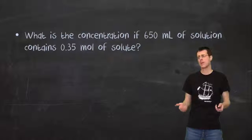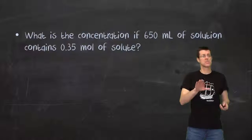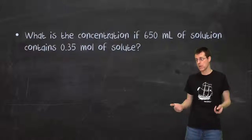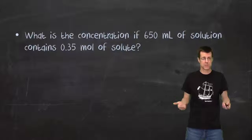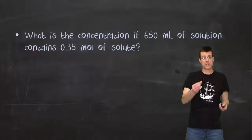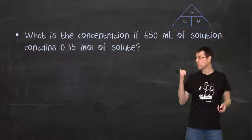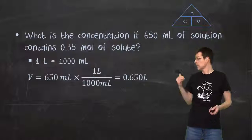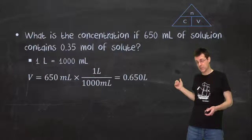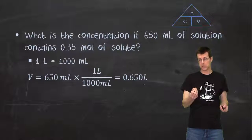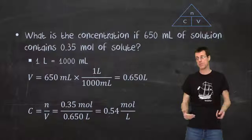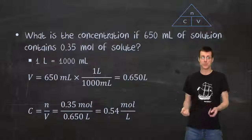Another kind of question. Make sure you pause this, run the numbers, and make sure you understand it. What's the concentration if 650 mL of solution contains 0.35 mol of solute? You have to have volume in liters, which means our first job is to convert milliliters into liters. 1 L = 1000 mL. V = 650 mL × (1L/1000mL) = 0.650L. You don't have to set it up like that or show that work, but you do have to convert the milliliters into liters. Then you solve for concentration. Number of moles on top, volume on the bottom. There's your answer: 0.54 mol/L.